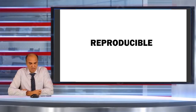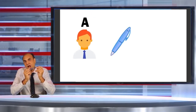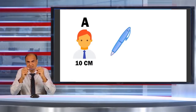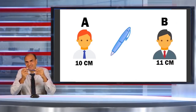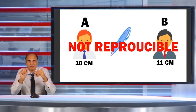A measurement system should also be reproducible. So what is a reproducibility error? For example, if I give this pen to Mr. A and ask him to measure the length of the pen, he says it's 10 centimeters. The next day, I give the same pen to him again and he says it's again 10 centimeters — so obviously there is no repeatability problem here. But if I give the same pen to Mr. B and he says the length is 11 centimeters, and both times he is able to repeat the same reading of 11 centimeters, there is no repeatability problem, but there is a reproducibility problem.